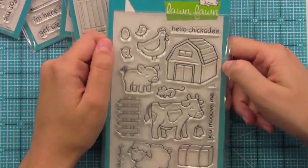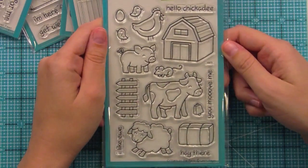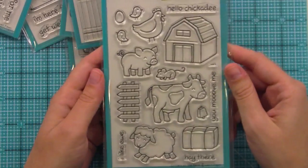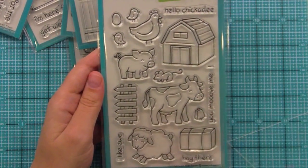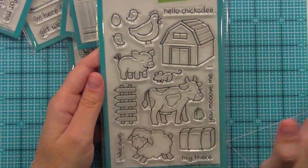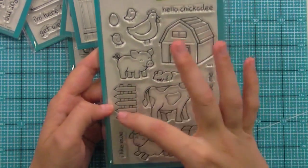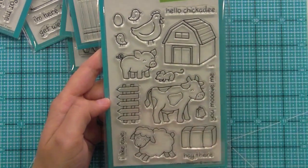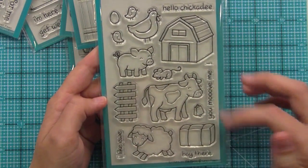Then we have Critters on the Farm. This is our most requested critter set. People were just really, really wanting this and so we just had to make it. Super fun. You've got the cow and the sheep and the pig and the chicken and her chicks and the mouse and of course barn and the fence. And a lot of these, like the fence, can be used with Critters in the Burbs. All of these critters can kind of hang out and chill together.